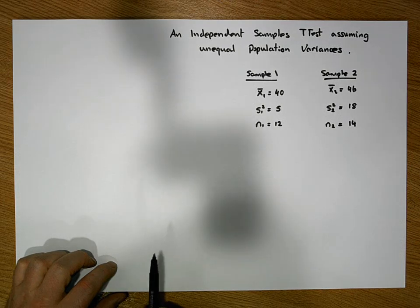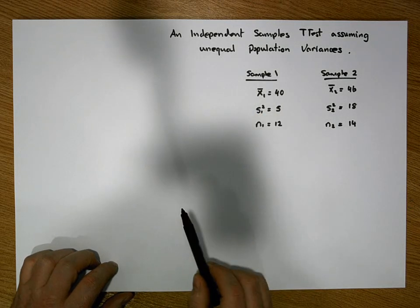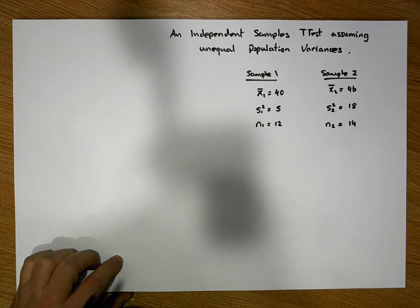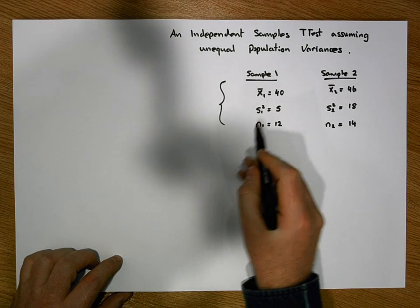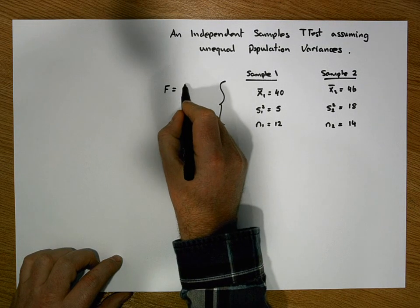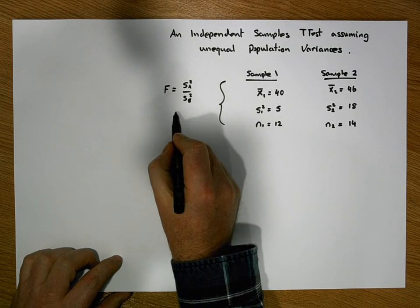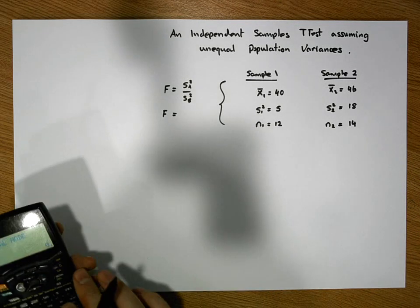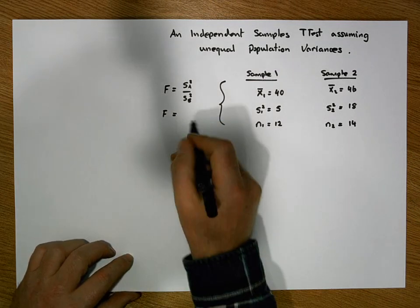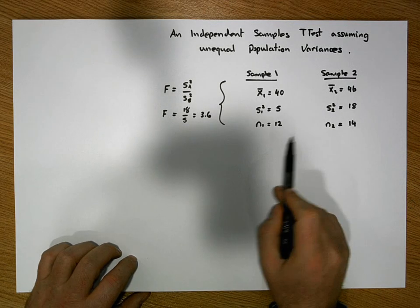I've modified my sample data from the previous videos on the independent samples t-test and the F-test, just to ensure that the two variances are statistically different from each other. The F-statistic is equal to the variance of group A divided by the variance of group B, which gives us 18 divided by 5, equaling 3.6.